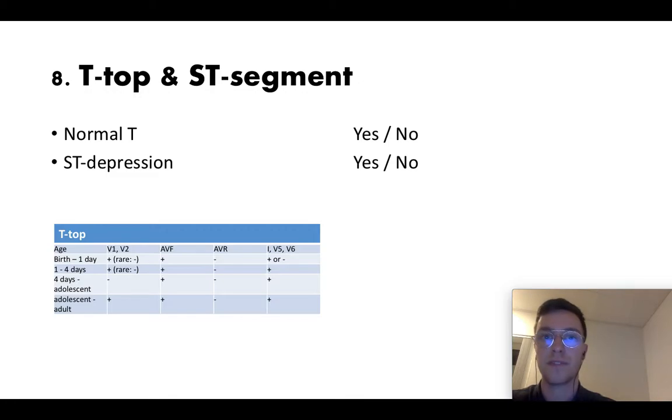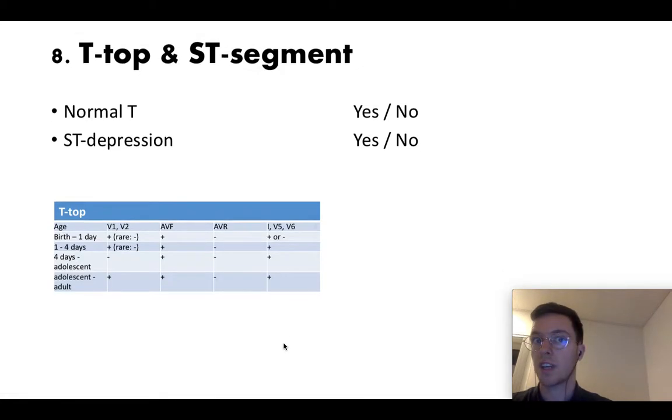Then your last step for the ECG is checking the T-top and the ST segment. Is the T-top normal? Is it not hyper? Doesn't it have too much voltage? Does it have the correct shape? And is there no ST depression which could be a sign for a myocardial infarct? Here again for example if you're checking the T-top for an adolescent in V1 or V2 it should be negative and AVF positive and so on. This is how you can use these tables.